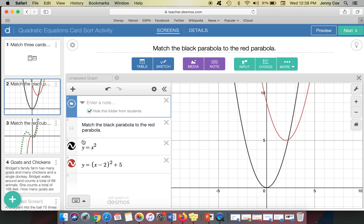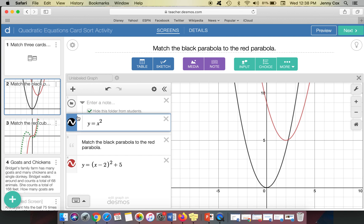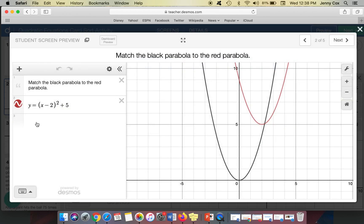Now anything that I drag underneath that folder, so watch as I pull this one up, you will see a vertical line created. So what that means is when you go into preview, students don't see the y equals x squared anymore.